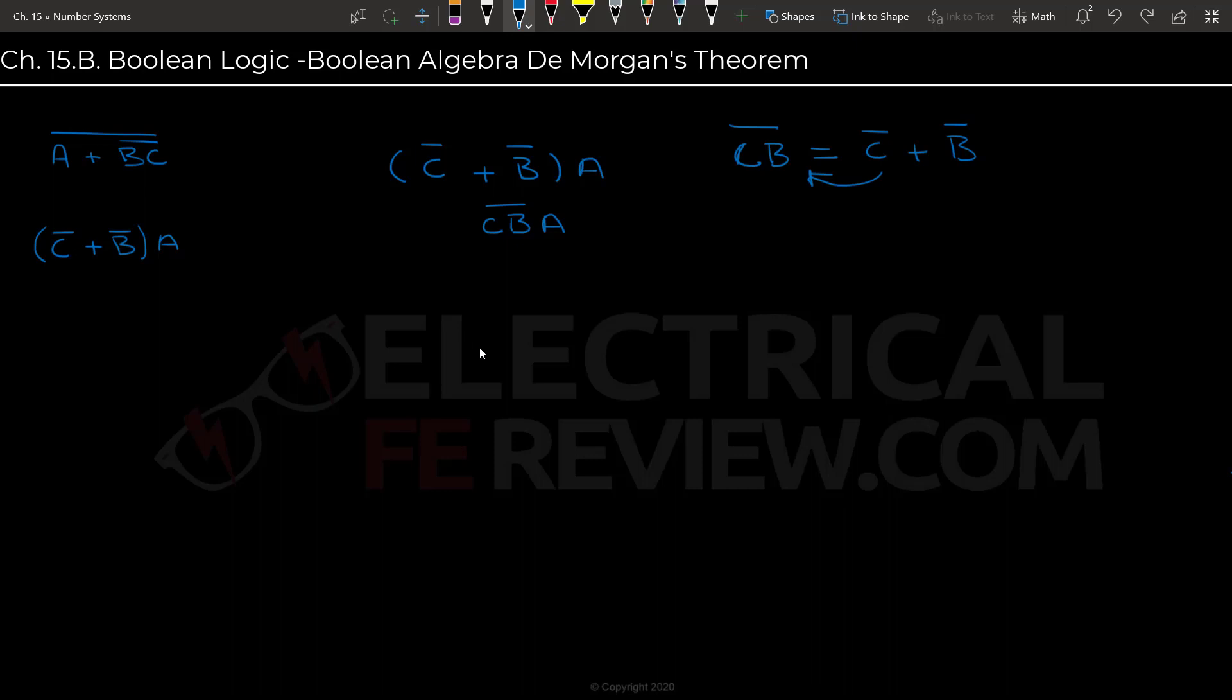So that's mostly it on DeMorgan's Theorem. Later on, we're going to go much more into depth with it and see how we can create circuits with just NAND gates.